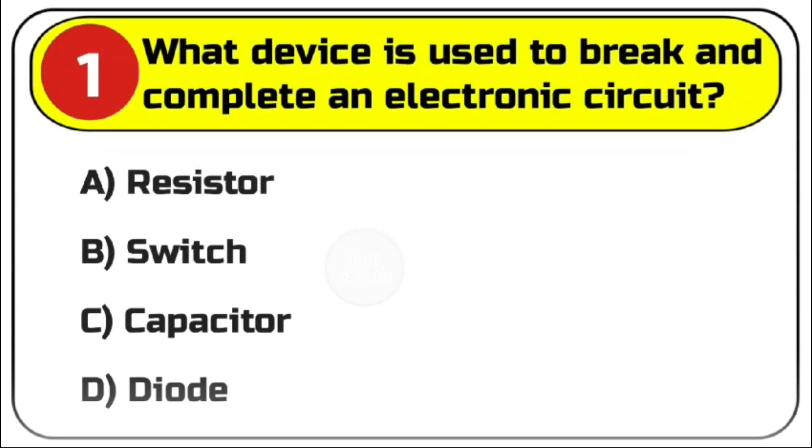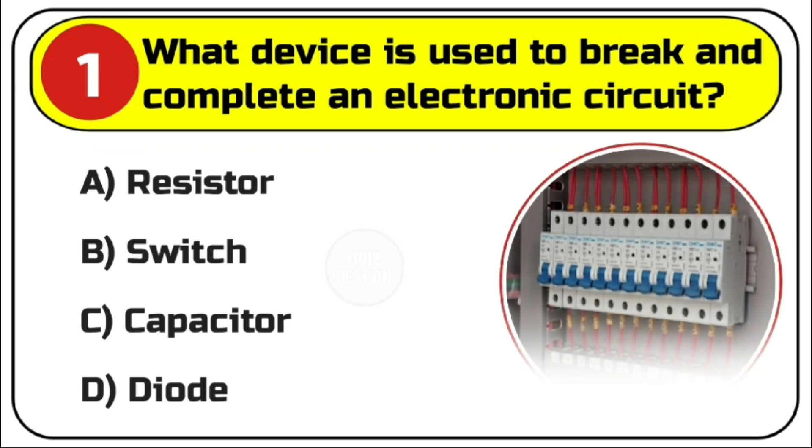Question number 1. What device is used to break and complete an electronic circuit? Options are A. Resistor. B. Switch. C. Capacitor. D. Diode.